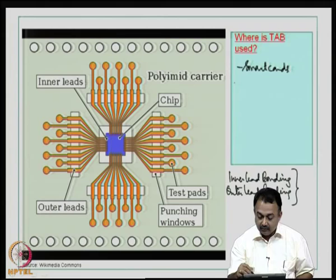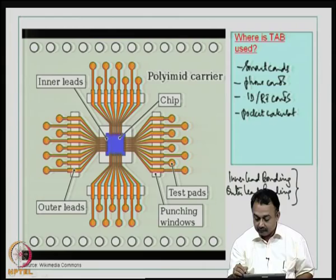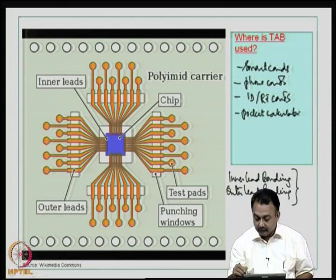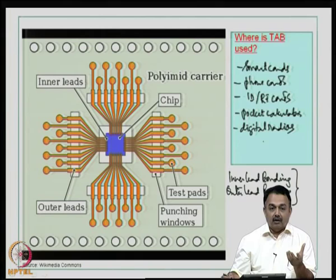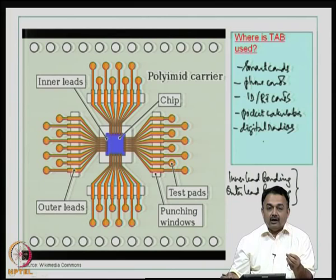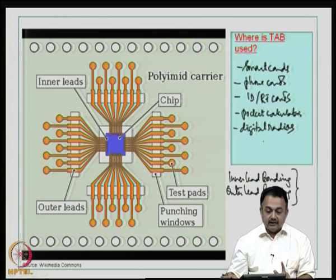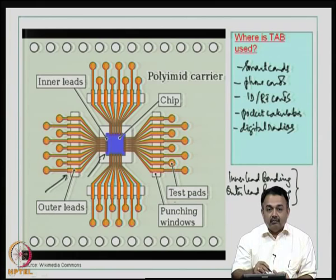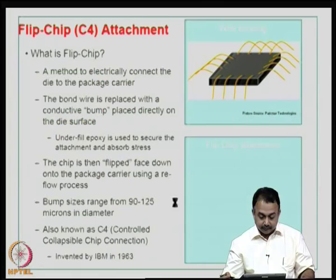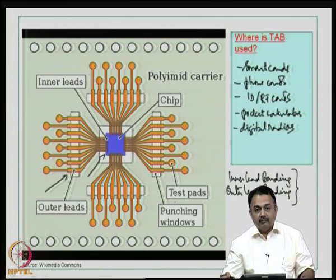TAB is used in phone cards, ID cards which use RF, pocket calculators, digital radios, and so on. You can imagine that TAB is used where the product size is very small and typically you have just one die that is required to be connected to a lead frame structure that will establish connection to the other parts of the circuitry. TAB involves first an inner lead bonding process. After that is checked, the outer lead bonding process is established and the extra material of the polyimide is then removed by cutting or removing it from the equipment.